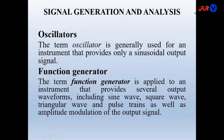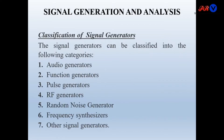The term oscillator is used for an instrument that produces sinusoidal output only, while a function generator provides several output waveforms including sine wave, square wave, triangular wave, pulse train, as well as amplitude modulation of the output signals. This is the key difference: an oscillator provides only sinusoidal output, while a function generator provides different types of waveforms.